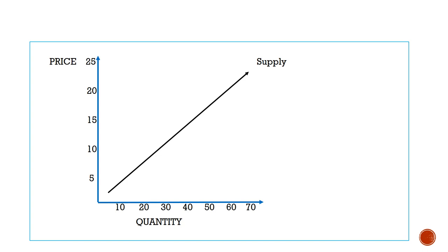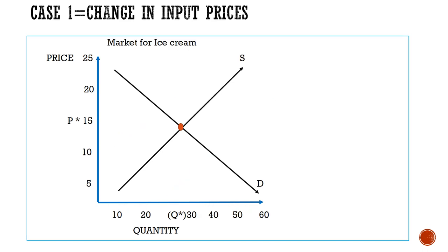When supply increases, the supply curve moves towards the right. And when supply decreases, the curve moves towards the left. Beginning from the first scenario — change in prices of inputs or resources.